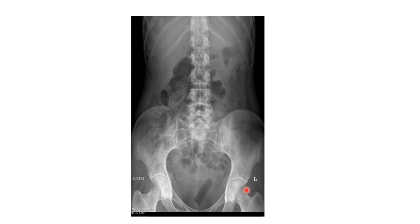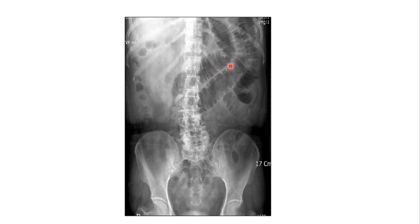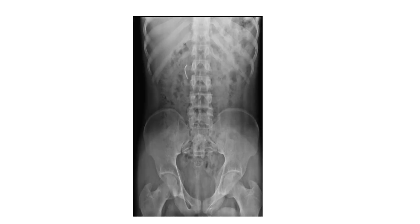Here is another plain AP view of the abdomen showing a case of intestinal obstruction, where you can see the step ladder pattern gas shadow in the intestine. The ribs, vertebrae, sacrum, pubic bone, and femur are also visible. The last example is a normal plain AP view of the abdomen with scattered gas shadows. No diaphragm is visible here, but there is a radio-opaque structure visible, which is likely an artifact.